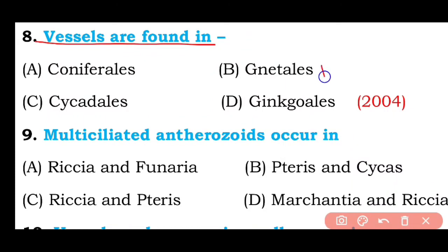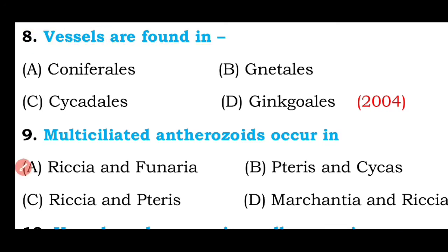Question number eight: Vessels are found in Coniferales, Gnetales, Cycadales, or Ginkgoales? The correct answer is option B — Gnetales is the most advanced order of gymnosperms and exceptionally has vessels.